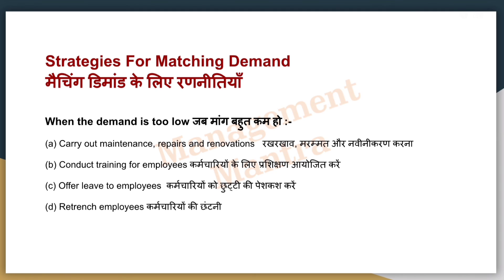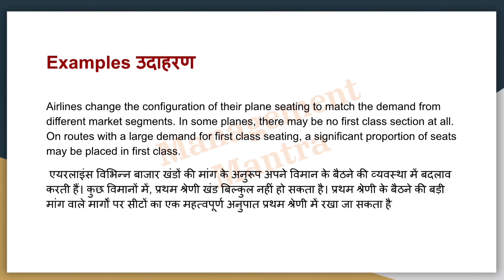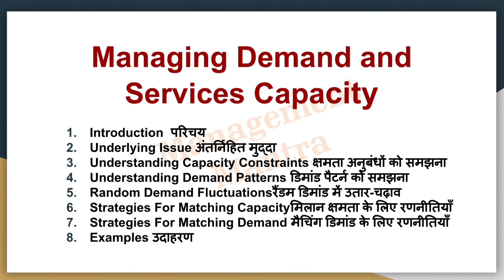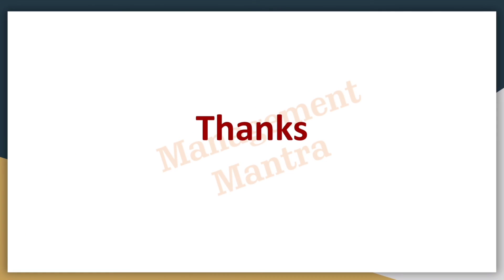For example, airlines look at their planes and seating to see how they can match demand across different market segments — such as first class sections. When there is low demand, they reduce first class capacity proportionally to keep costs manageable. This video shows you how to manage demand and service capacity. If the video was good, please like, subscribe, and comment. Thank you.